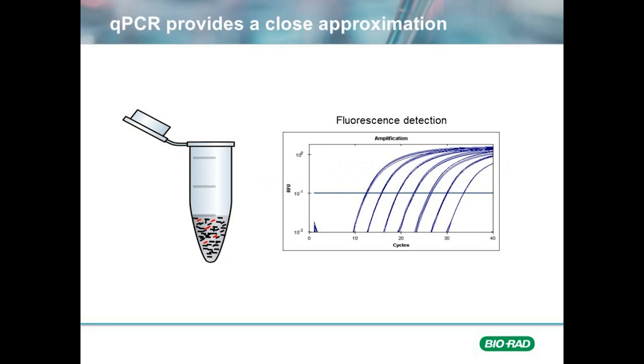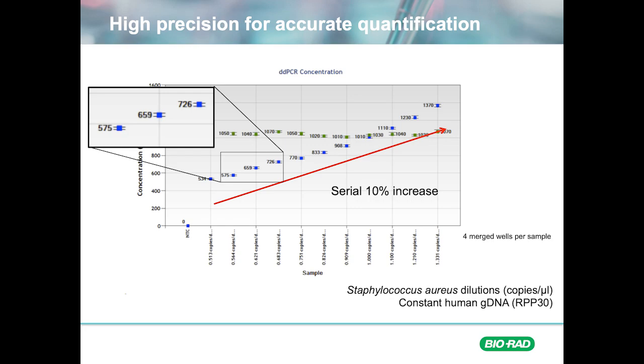When higher accuracy and precision is required, or when the sample or targets are more challenging, Droplet Digital PCR is the go-to technology. You have probably heard of ddPCR as you are currently watching this video. What you may not know is that digital PCR was invented before qPCR, but it was unaffordable and technically challenging until recently.